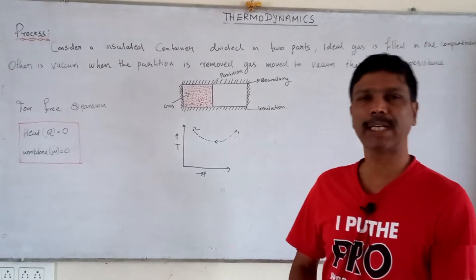Work done in free expansion process is zero. The fluid expands suddenly into vacuum through an orifice. The gas expands suddenly into a large dimension vacuum. The work done in free expansion is zero — that is the answer.